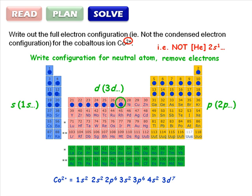Now, the filled orbital with the highest quantum number is the 4s orbital, so remove two electrons from this orbital to get the electron configuration for cobalt 2+.